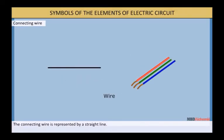Connecting wire: The connecting wire is represented by a straight line. It is usually made of copper and provided with insulation.